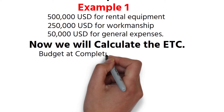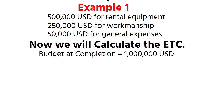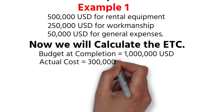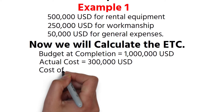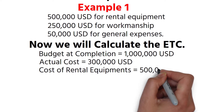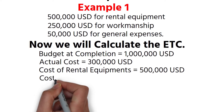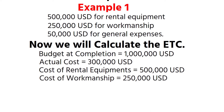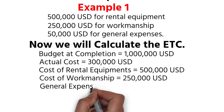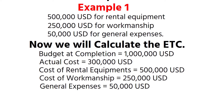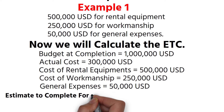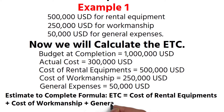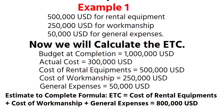Now we will calculate the ETC. Budget at completion equals 1 million US dollars. Actual cost equals 300,000 US dollars. Cost of rental equipment equals 500,000 US dollars. Cost of workmanship equals 250,000 US dollars. General expenses equals 50,000 US dollars. Estimate to complete equals cost of rental equipment plus cost of workmanship plus general expenses, which equals 800,000 US dollars.